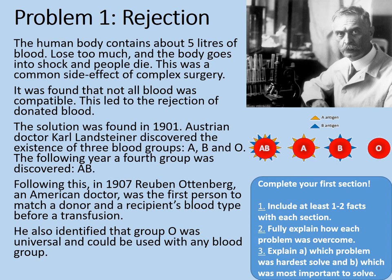Let's complete our first section on either our mind map or structured notes. Include at least one or two facts for each section, and fully explain how each problem was overcome. Then explain which problem was hardest to solve and which was the most important to solve. Pause the video, make your notes, and do your explanations about problem one — rejection.